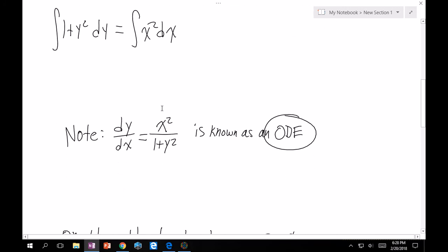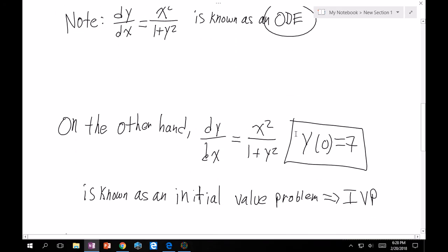Note again, dy/dx is equal to x squared over 1 plus y squared is known as an ODE. On the other hand, if I tell you that y of 0 is equal to 7, I'm telling you that at x equals 0, my function is going to equal 7. I've thus imposed an initial condition on my differential equation, which means that I'm going to find one particular solution instead of a family. And this is known as an initial value problem, henceforth known as an IVP.